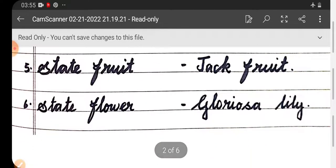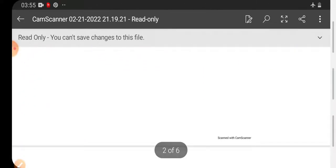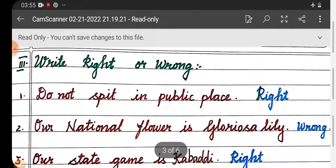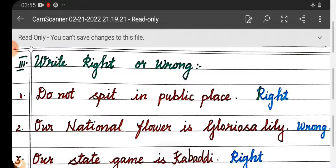Sixth one, state flower: Gloriosa Lily. Roman letter three: Right or Wrong. First one: Do not spit in public place. Right.